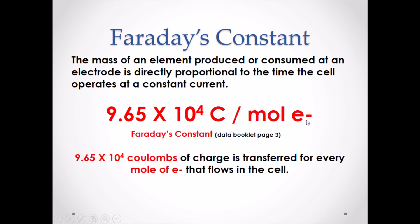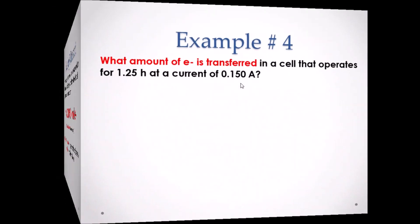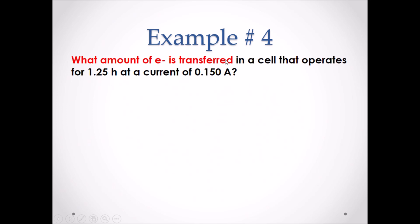This represents that 9.65 × 10⁴ coulombs of charge is transferred for every one mole of electrons that flows through a cell. This is another unit conversion, allowing us to convert coulombs to moles of electrons, or vice versa. Example number four: what amount of electrons is transferred in a cell that operates for 1.25 hours at a current of 0.150 amps? Pause the video and attempt this example.